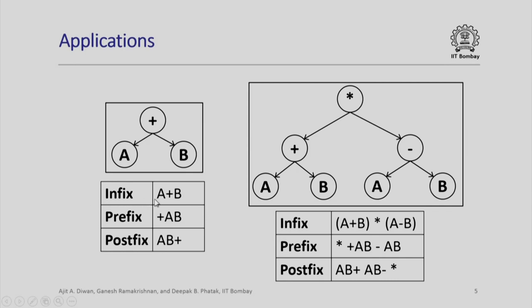Consider the simple expression A plus B that we write. We recall that in prefix we would have written it as plus A B, and in postfix we would have written it as A B plus. If we create a binary tree with plus as the root and parent, and A on the left, B on the right, you will notice that if we traverse it in in-order, pre-order, and post-order, we will get exactly this sequence of symbols appearing as output.